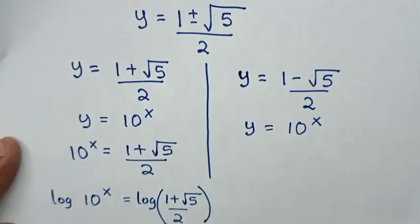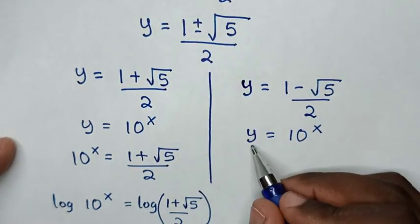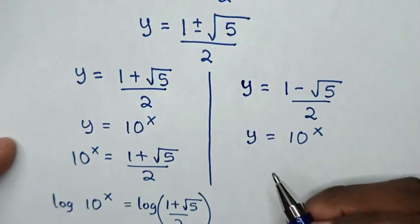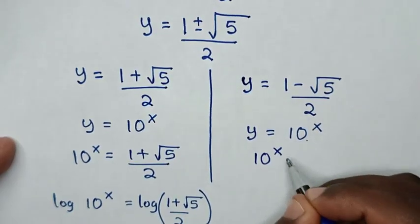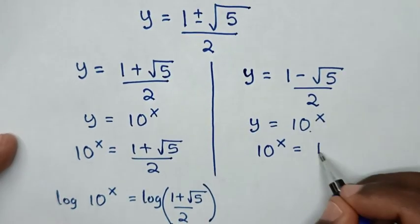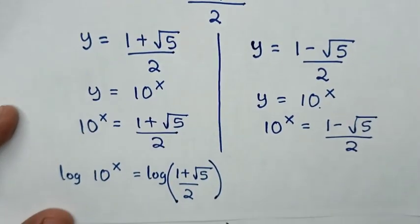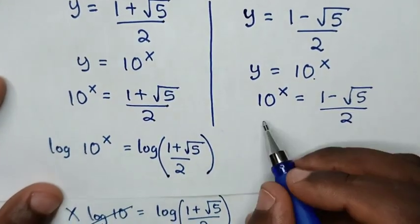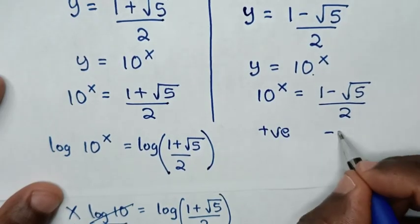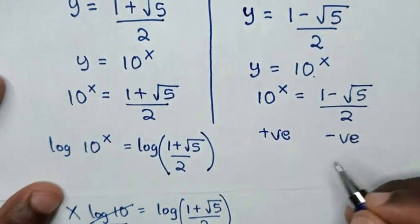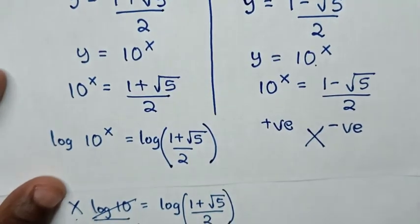Now continuing with the second solution: 10^x = (1 − √5) / 2. But 10 to the power of any number is always positive, and (1 − √5) / 2 is negative. Since positive cannot equal negative, this solution is rejected.